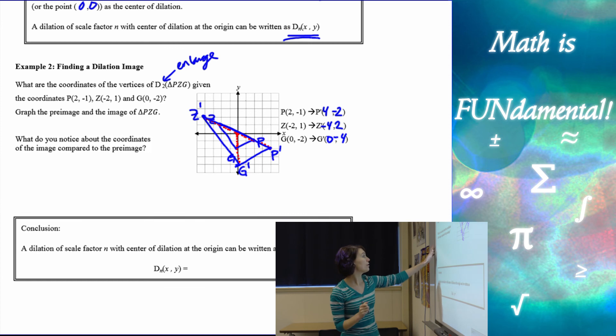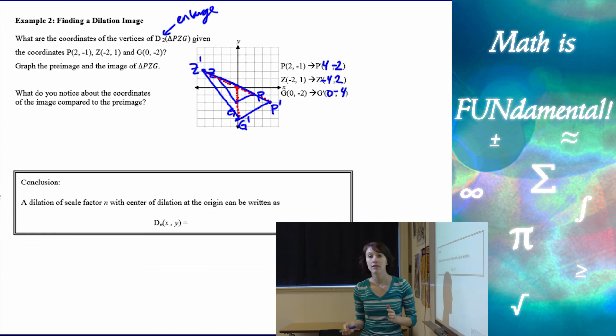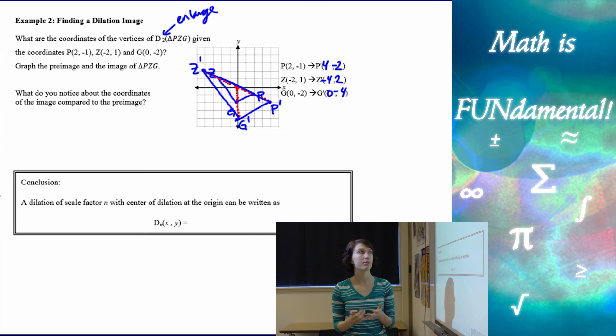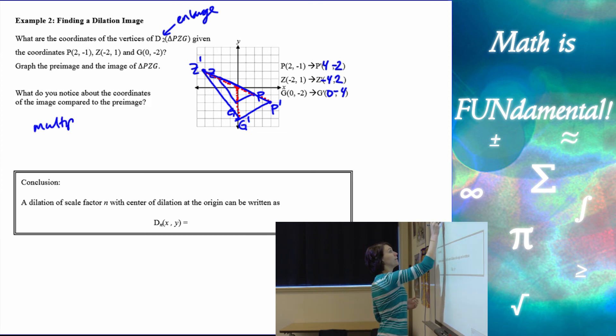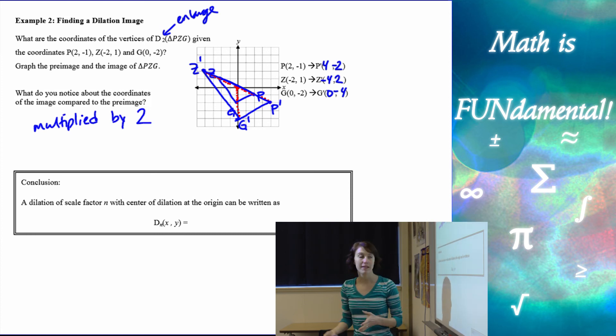Now, what do you notice about the image points compared to the pre-image points? If you look, they all got multiplied by 2. They got multiplied by the scale factor.